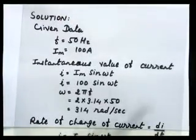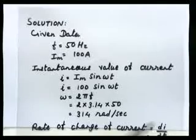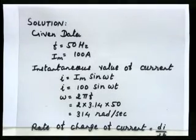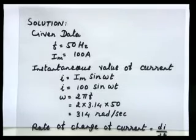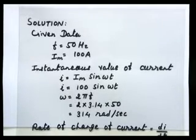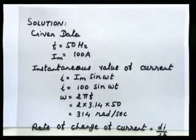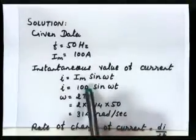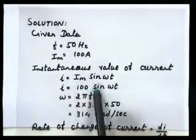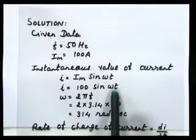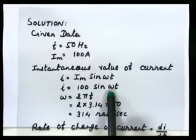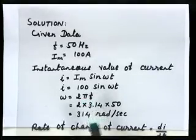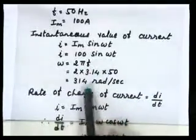Given data: frequency is 50 Hz and maximum value of current is 100 ampere. First, find the instantaneous value of current — the equation is i = im sin(ωt). Maximum current is 100 ampere, so i = 100 sin(ωt). To find omega: ω = 2πf. Frequency is given, so ω = 314 radian per second.